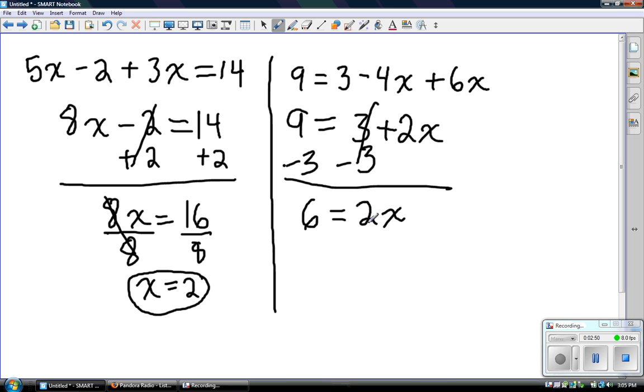And then lastly, in order to solve, since it's 2 times x, we're going to divide both sides by 2 in order to get x alone by itself on one side of the equation. And what we're left with is 3 equals x, or x equals 3. I don't know how you read. Great job.